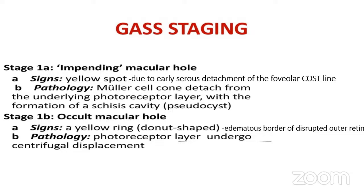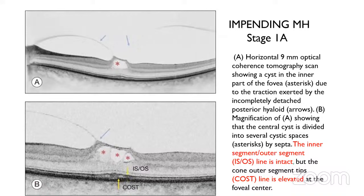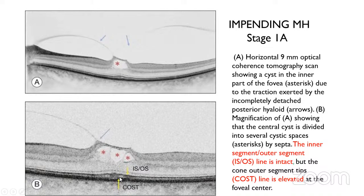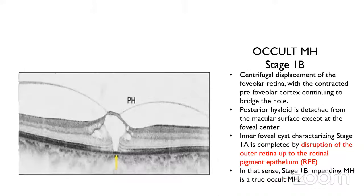Stage 1b shows a yellow ring or donut shape, which is the edematous border of the disrupted outer retina, with centrifugal displacement of photoreceptors. On OCT of the impending macular hole, the IS/OS junction is intact but the cone outer segment tips are elevated (stage 1a). In stage 1b there is disruption up to the retinal pigment epithelium — a defect is seen in both the IS/OS junction and the RPE. Stage 1b impending macular hole is therefore a true occult macular hole.